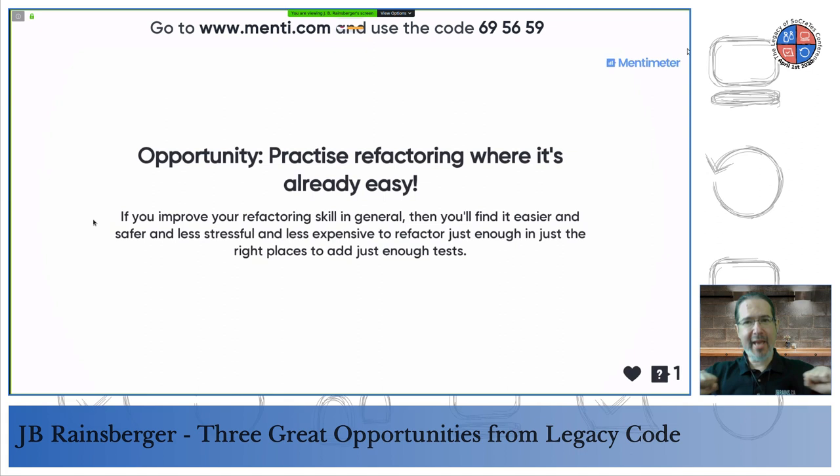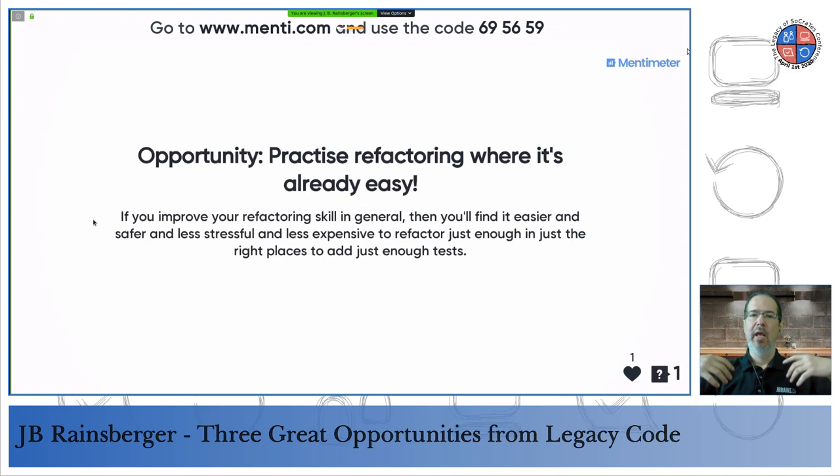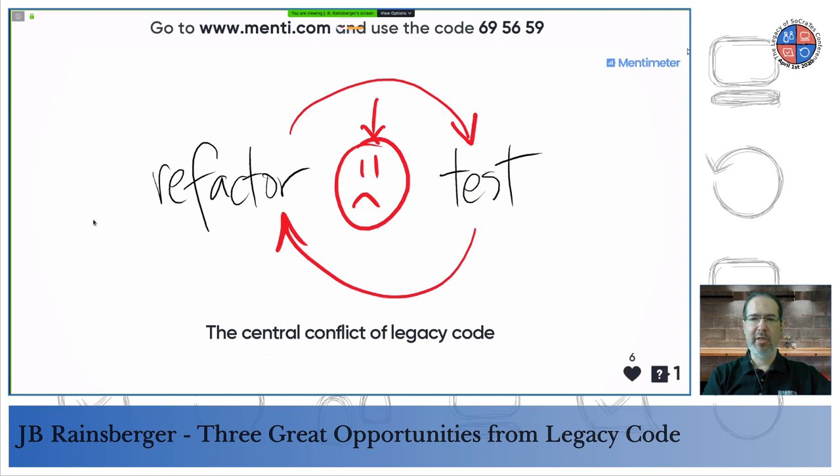The idea is to use micro-committing not because it's a good idea in general, but because when you need it, it's nice to have practiced and removed the resistance. Don't dive into micro-committing on legacy code first — start micro-committing where it's already easy. The two main ways to resolve the central conflict are to add tests or to make refactoring safer in other ways, and it's the second one that many programmers forget is even an option.